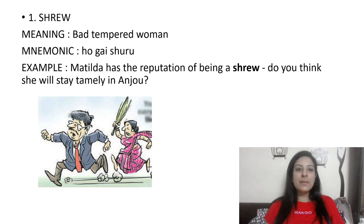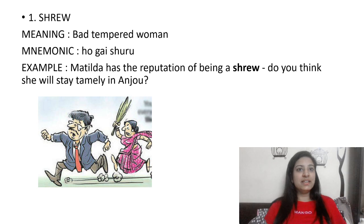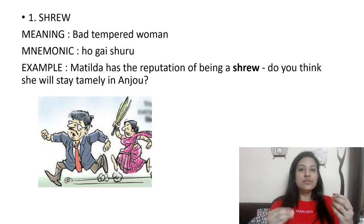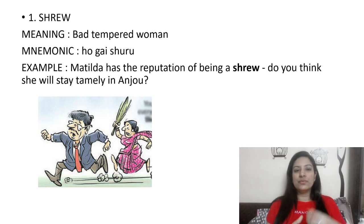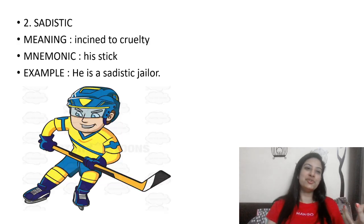The first mnemonic is 'shrew.' Shrew means a bad-tempered woman. The mnemonic for this can be 'ho gayi shuru' — imagine a lady chasing someone on a bus; that's her starting up again. For example: Matilda has a reputation of being a shrew. Do you think she was easy to control? No — such a lady cannot be controlled by anyone. Bad-tempered woman is a shrew.